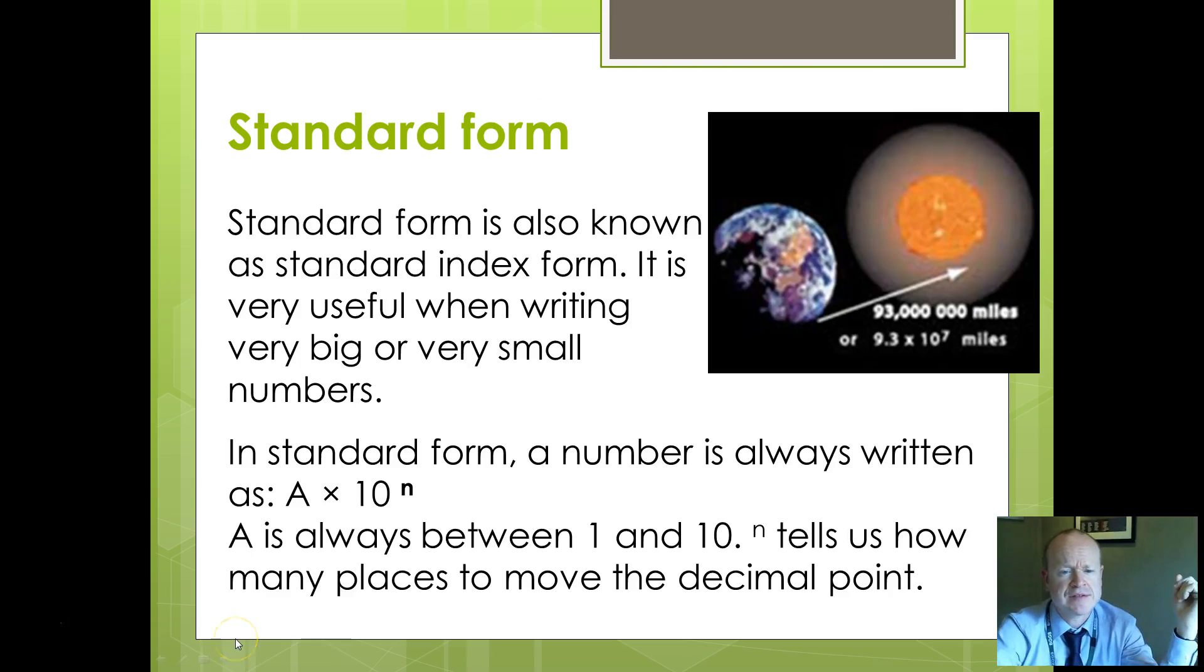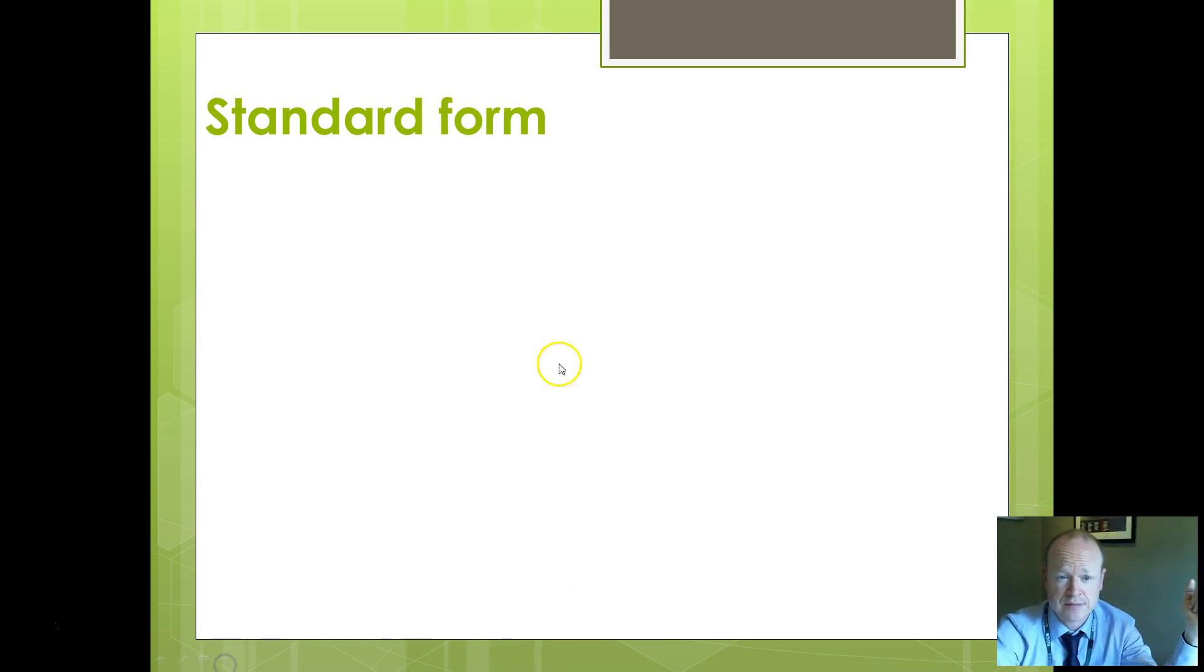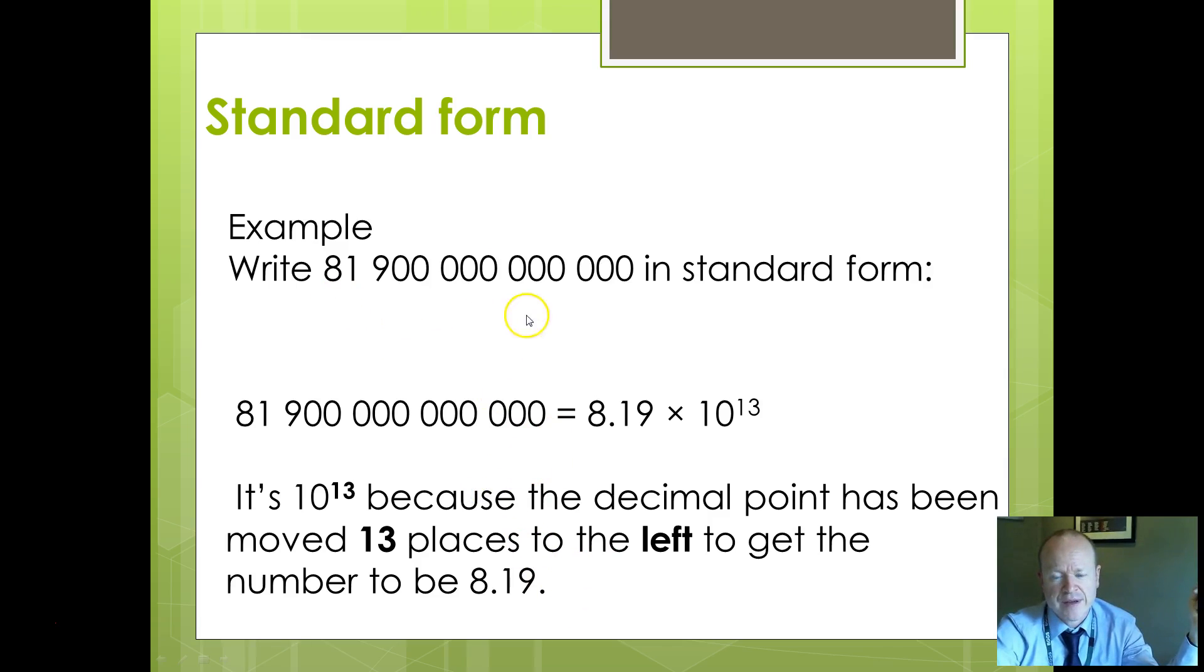You need to be able to use standard form or standard index form to help write large or small numbers. You should have done this in maths at GCSE. In standard form, a number is always written A times 10 to the power of N. A is always between 1 and 10. N will tell us how many places to move the decimal point. Here we've got a very big number. How do we convert that to standard form? You take your number and it's written as somewhere between 1 and 10. So we said 8.19 times 10 to the 13. It's 10 to the 13 because we've got to move the decimal point 13 places to the left to get to be 8.19.